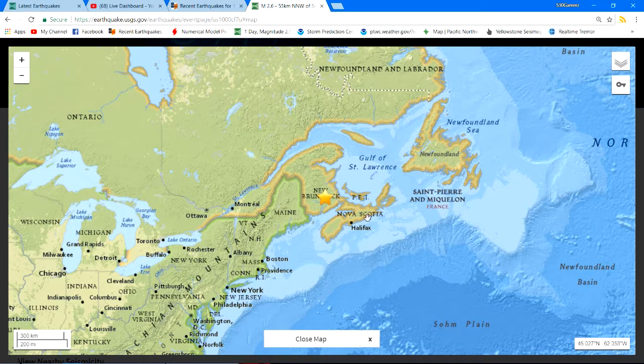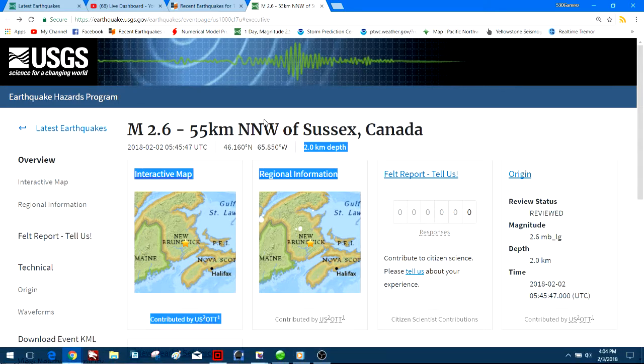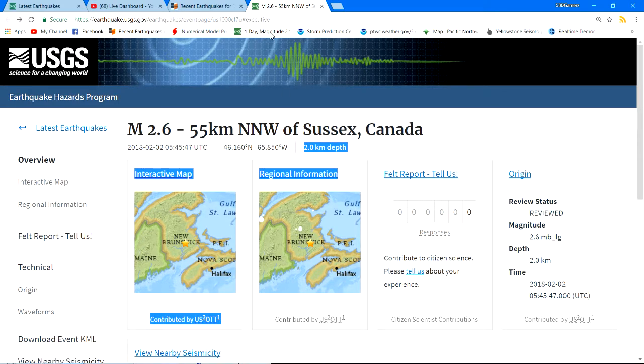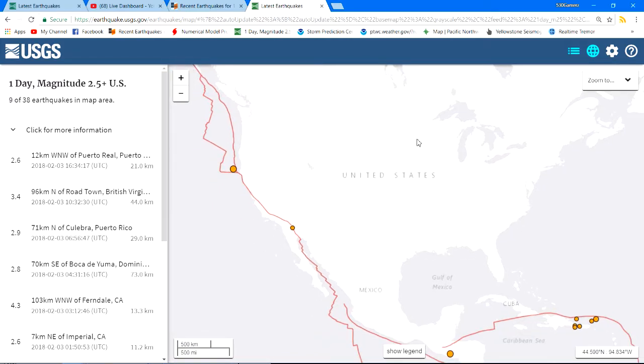Kind of over by Nova Scotia. Interesting activity up there, but nothing big, just some minor movement at very shallow depths of two kilometers. There's that 4.3 over here along the Cascadia or the Gorda escarpment region near the Cascadia subduction zone.